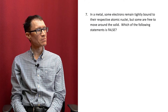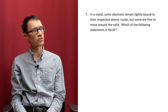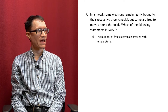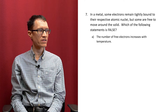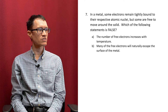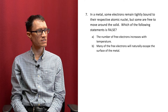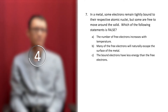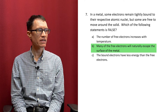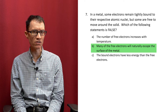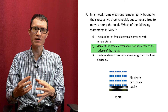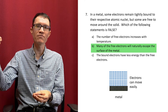Question 7: In a metal, some electrons remain tightly bound to their respective atomic nuclei, but some are free to move around the solid. Which of the following statements is false? A: The number of free electrons increases with temperature. B: Many of the free electrons will naturally escape the surface of the metal. Or C: The bound electrons have less energy than the free electrons. The correct answer is B — many of the free electrons will naturally escape the surface of the metal. That sentence is false. Just because you have free electrons moving inside of the piece of metal doesn't mean that the electrons are free to leap off of the surface of the metal.